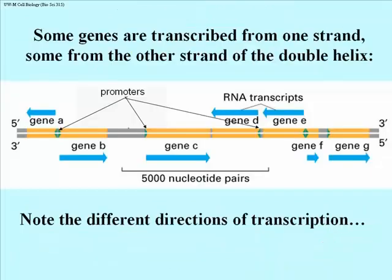In a double-stranded chromosomal DNA molecule, whether bacterial or eukaryotic, genes can face in different directions, meaning the template strand can sometimes be the upper strand and sometimes the lower strand. Shown in blue are the directions of transcription of different genes, arbitrarily labeled A, B, C, D and so on. The promoters are shown as little greenish arrows. Each gene has a promoter that faces in the correct direction for that gene to be transcribed — it's at the tail end of each of those arrows.